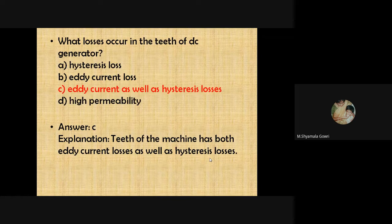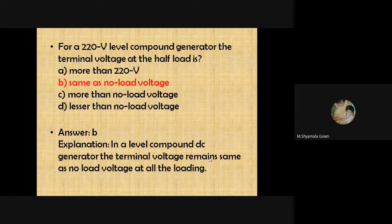What losses occur in the teeth of a DC generator? Both eddy current and hysteresis losses occur in the teeth of the machine. For a 220-volt level compound generator, the terminal voltage at half load is the same as no-load voltage — that is why it is called a level compound generator.